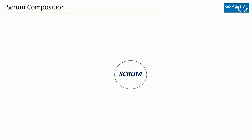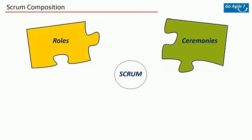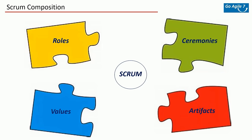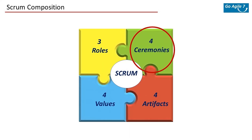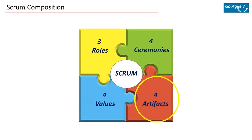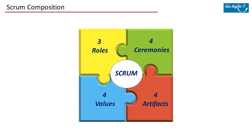In Scrum there are broadly four things to understand: Scrum roles, Scrum ceremonies, Scrum artifacts, and Scrum values. Scrum roles are the different people involved in Scrum. Scrum ceremonies are the various meetings that happen in a typical sprint. Scrum artifacts are the tangible deliverables. To summarize: in Scrum there are three roles, four ceremonies, four artifacts, and four values.